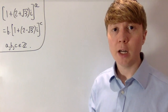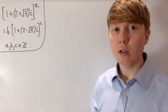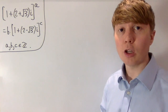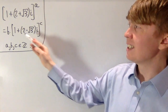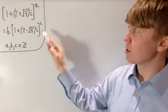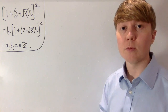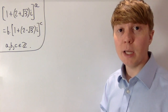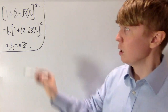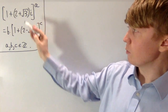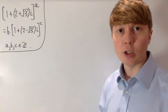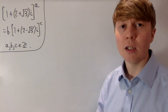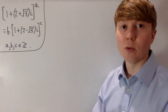We're going to solve this problem where we need to find all the integer solutions a, b, and c of this equation, where we've got a complex number raised to the power of a, and another complex number raised to the power of c, multiplied by some integer b. The first thing we'll do is express each of these complex numbers in modulus-argument form. This will make raising them to some integer power slightly more manageable to work with.